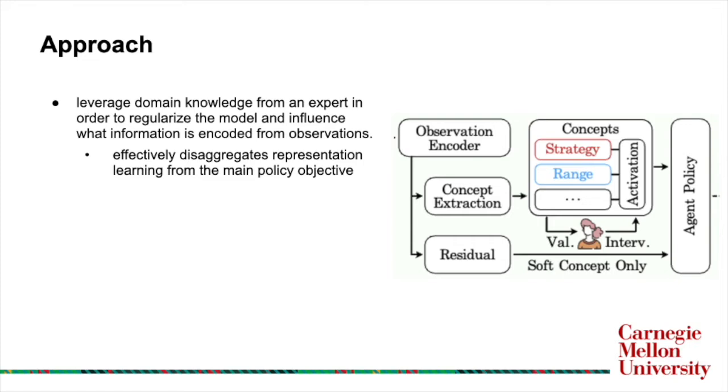We first learn to predict a representation from the raw observation, and then we pass on that representation to the agent policy. We do this in the form of learning a set of concepts which are semantically meaningful labels that can be extracted from observations, such as the presence of a concrete or abstract feature in an observation. One example of this is the existence of a tree or the intention of a human.